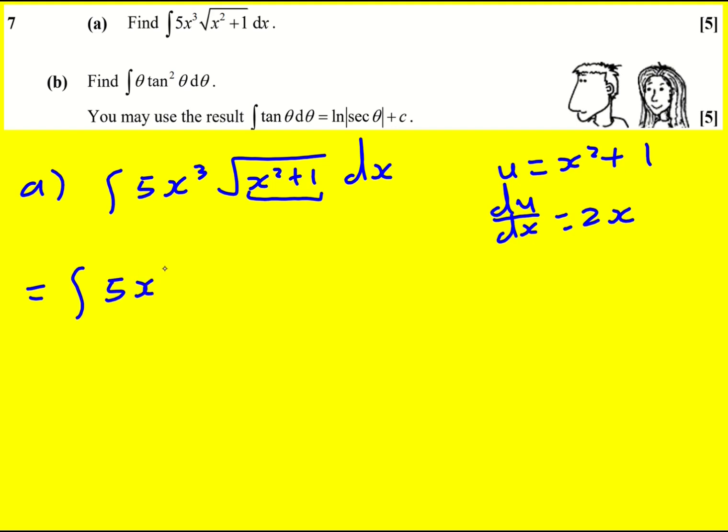So what happens? This becomes 5x cubed. I'll write it as root u for the moment, and then I can write dx by du times du. You might alternatively be somebody who likes to make dx the subject, it's going to be du over 2x but I prefer to do it this way. This is going to become 1 over 2x, it's the same, it gets to the same place.